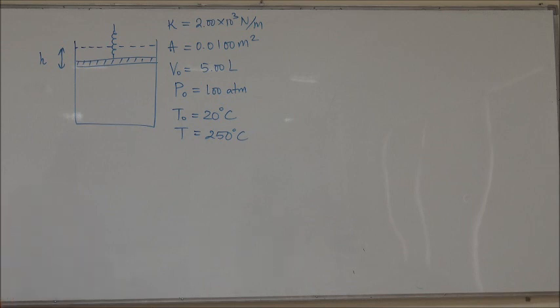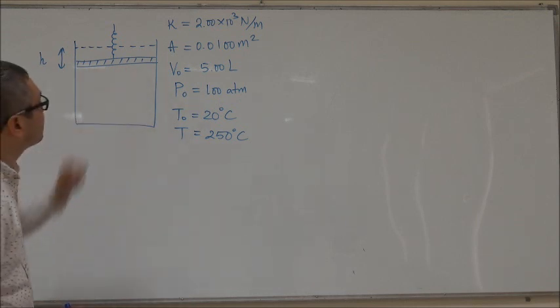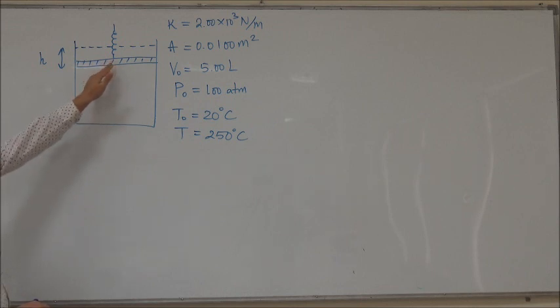In this problem we are given a cylinder filled with gas and closed by a piston which is free to slide up and down. The piston is connected to a spring with a given value of spring constant K.